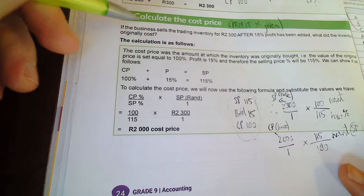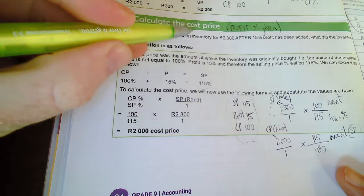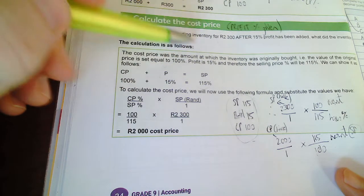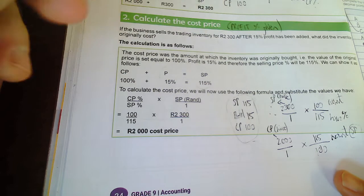Hello Grade Nines, this video will work out the cost of sales or cost price where the profit percentage was given. So it's a value that you work out, and the profit percentage has been given, and they also give you some value in the question itself.